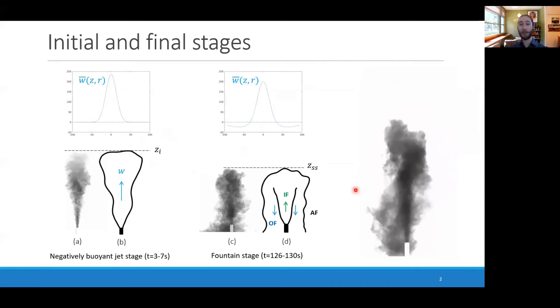Once it's collapsed back into itself, it forms an inner flow, outer flow structure, and it oscillates around some other height called the steady state height. The initial rise we're going to call the negatively buoyant jet stage.